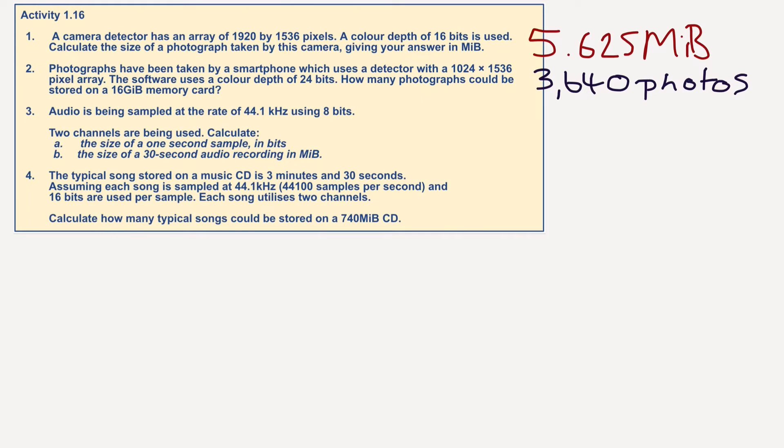Let's have a look at the next question, Question 3. Audio is being sampled at a rate of 44.1 kilohertz using 8 bits. Two channels have been used, so it's in stereo. Calculate the size of a 1 second sample in bits. So the sample size equals 44,100. I've done that because it's kilohertz, so I've turned it into hertz.